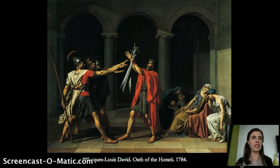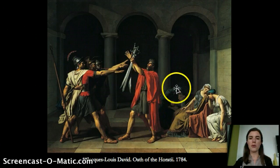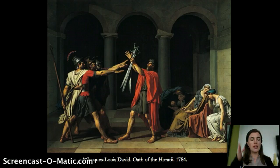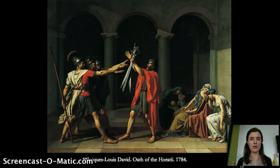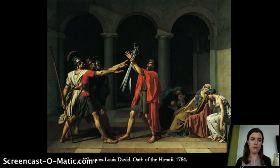You see the three brothers, their father, and the grieving women in the composition. There is clear gender differentiation in color and line: the men are strictly and vertically defined, while the women are curved over. Arches divide the composition into three parts, and you have an austere neoclassical interior with a simple Doric column and a strong perspective scheme. This was a blockbuster painting — people waited in line to see it, and it became very famous both in France and in Italy.